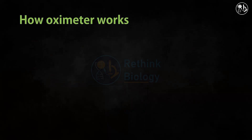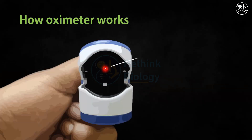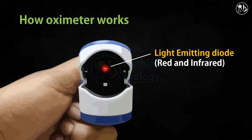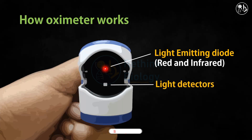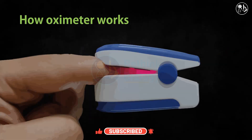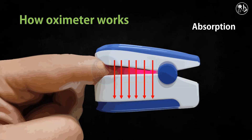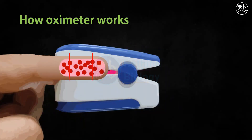Now coming to the working principle of the oximeter. A typical oximeter has light emitting diodes for red and infrared lights, and a detector just opposite to the diode.